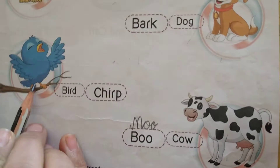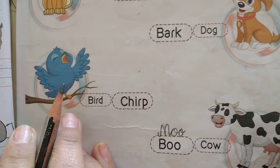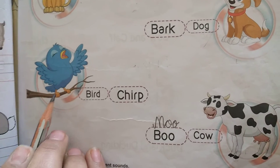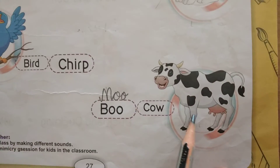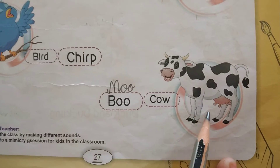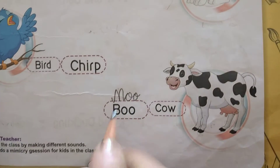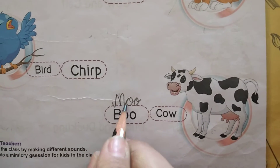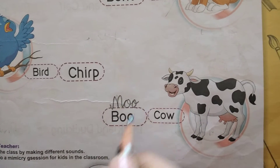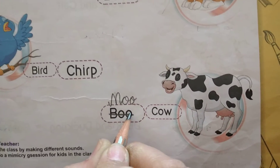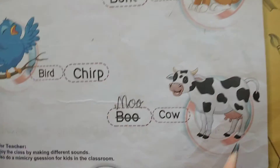Bird. Bird says chirp. And last, cow. The cow says moo. M-double-O. Moo.